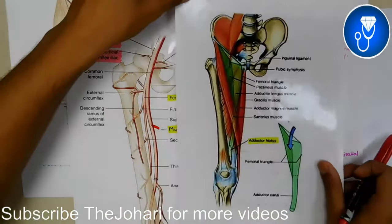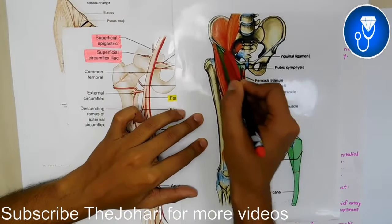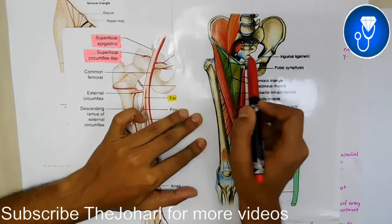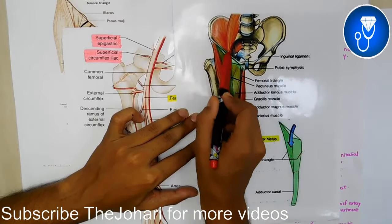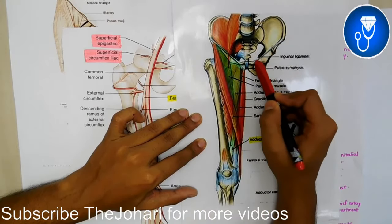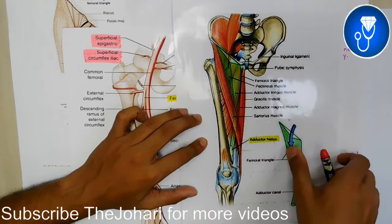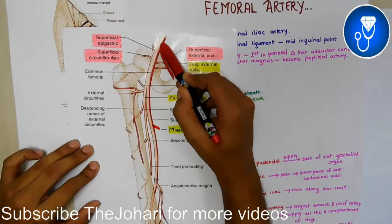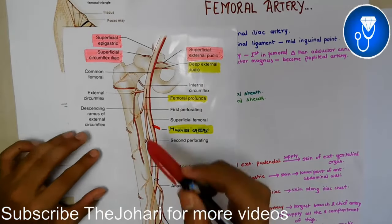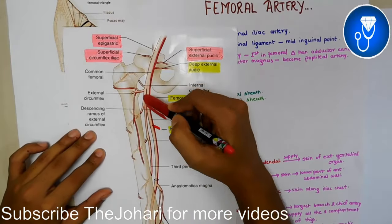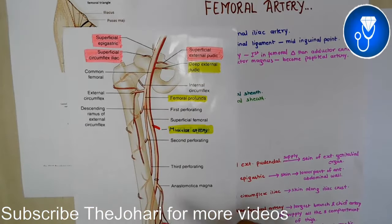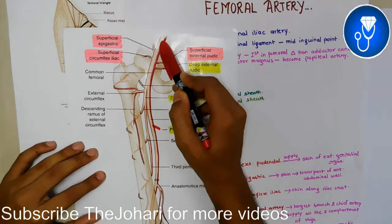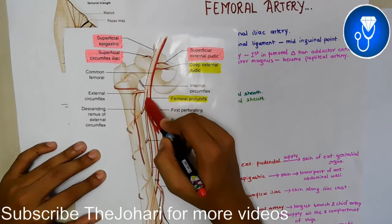If we look at this diagram, you can see the inguinal ligament, which runs from the anterior iliac spine to the pubic tubercle. In this inguinal ligament, the external iliac artery becomes the femoral artery. So the femoral artery is the continuation of the external iliac artery, and then it goes to the front of the thigh.